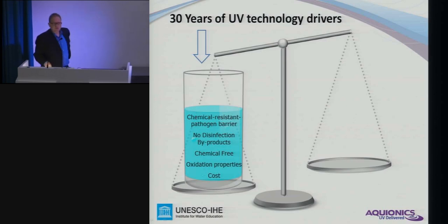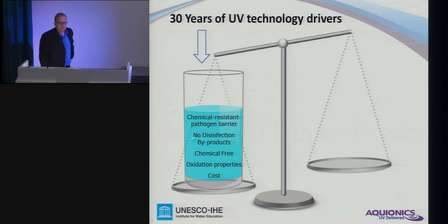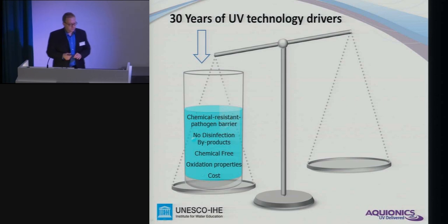Regarding UV disinfection, we pointed out a few things which have driven the UV technology and its development and application. Some drivers include chemical-resistant pathogen barriers. You may have heard about cryptosporidium — water-borne organisms that can survive chlorination and still result in severe illness. Another factor is that since we're not using any chemicals, there are no byproducts formed that could be cancerous. So chemical-free treatment, some oxidation properties, and compared to other solutions, it is also cost-competitive.